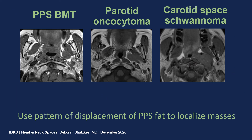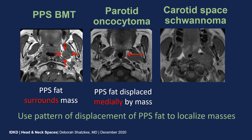You can use the pattern of displacement of the parapharyngeal space fat to help localize lesions. The upper left image shows another parapharyngeal space benign mixed tumor — a thin stripe of T1 bright fat signal completely surrounds the mass, placing it primarily in the parapharyngeal space. The middle image shows an oncocytoma, another benign salivary tumor arising from the deep lobe of the parotid gland, where the parapharyngeal space fat marked by the arrow is displaced medially. The image on the right shows a carotid space schwannoma displacing the parapharyngeal space fat anteriorly, placing it in the posteriorly located carotid space.